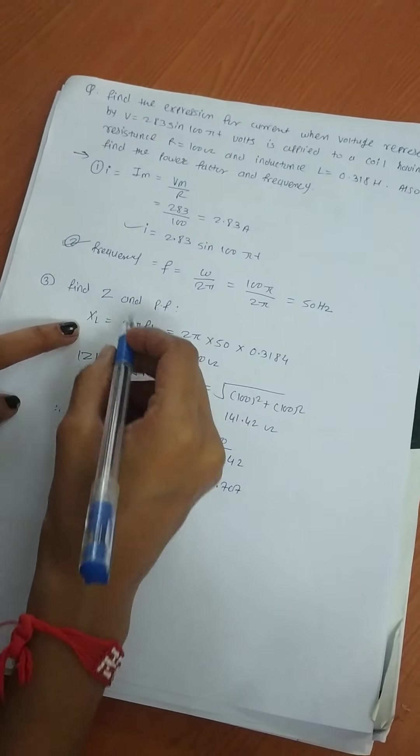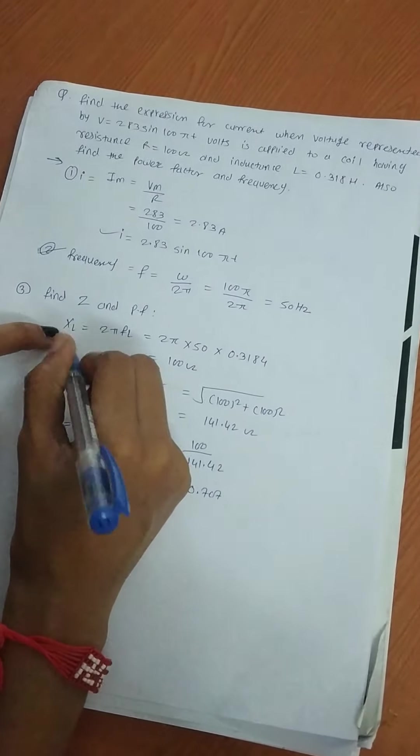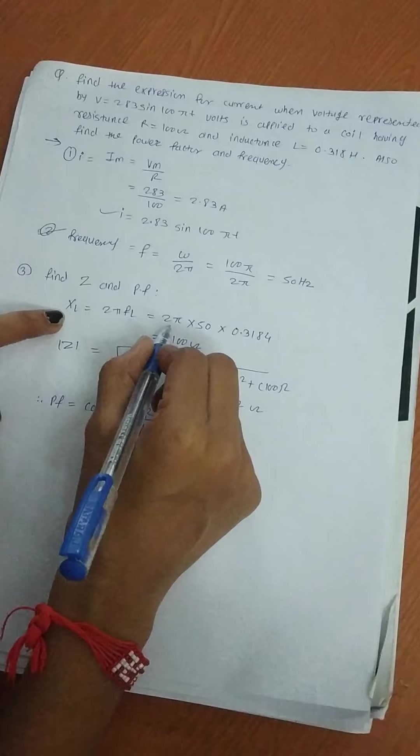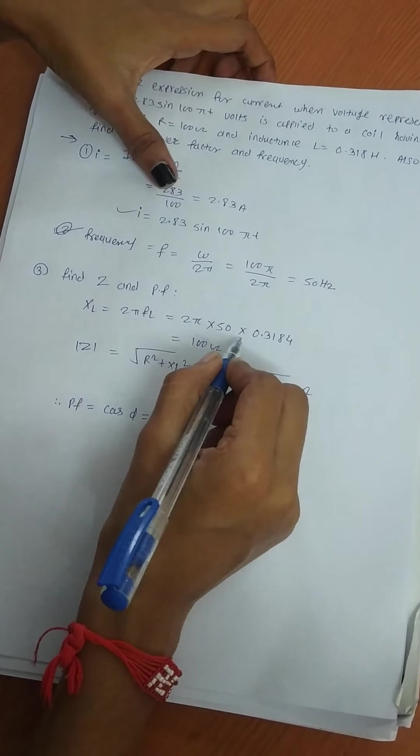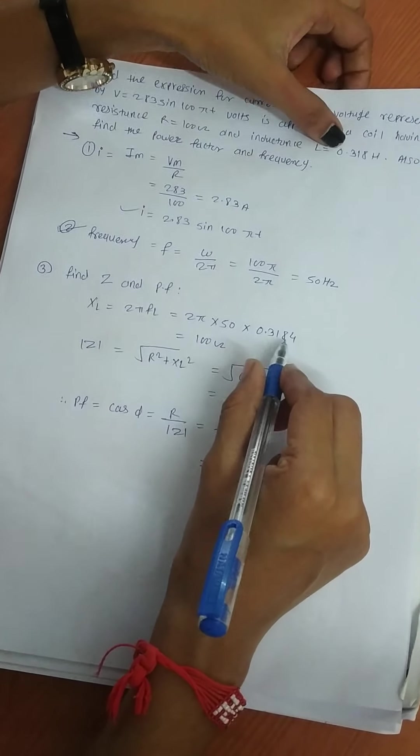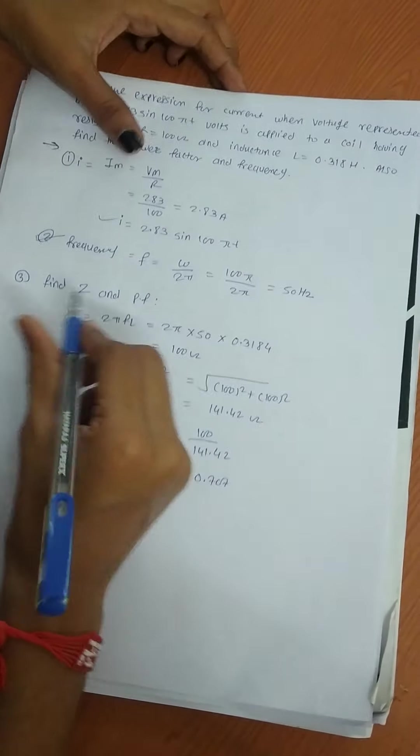Next, find the impedance and power factor. For impedance, we first find XL. XL = 2πFL, where 2π times frequency 50 hertz times the value of inductance 0.318 gives XL